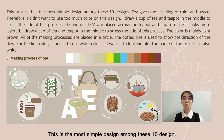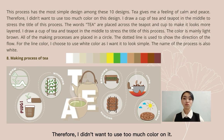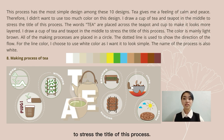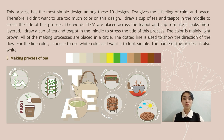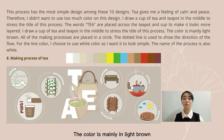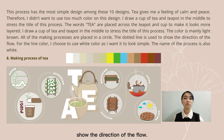Next, tea. This is the most simple design among these 10 designs. Tea gives me a feeling of peace and calm, so I didn't want to use too much colour on it. A cup of tea and teapot in the middle stress the type of this process. The word 'tea' is placed across the teapot and cup to make it look more layered. The colour is mainly light brown, and the dotted line is used to show the direction of the flow.